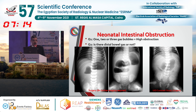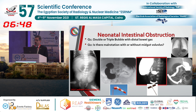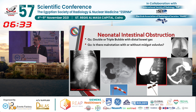If you have a double or triple bubble sign with no distal bowel gas, this baby goes directly to surgery. But if you have two or three bubbles with scattered distal bowel gas, you have to do an emergency upper GI contrast study. Please remember: when you perform an upper GI contrast study for high obstruction, your main aim is to document where the duodeno-jejunal junction is. If you find it at any location other than the left hypochondrium, then you have a problem.